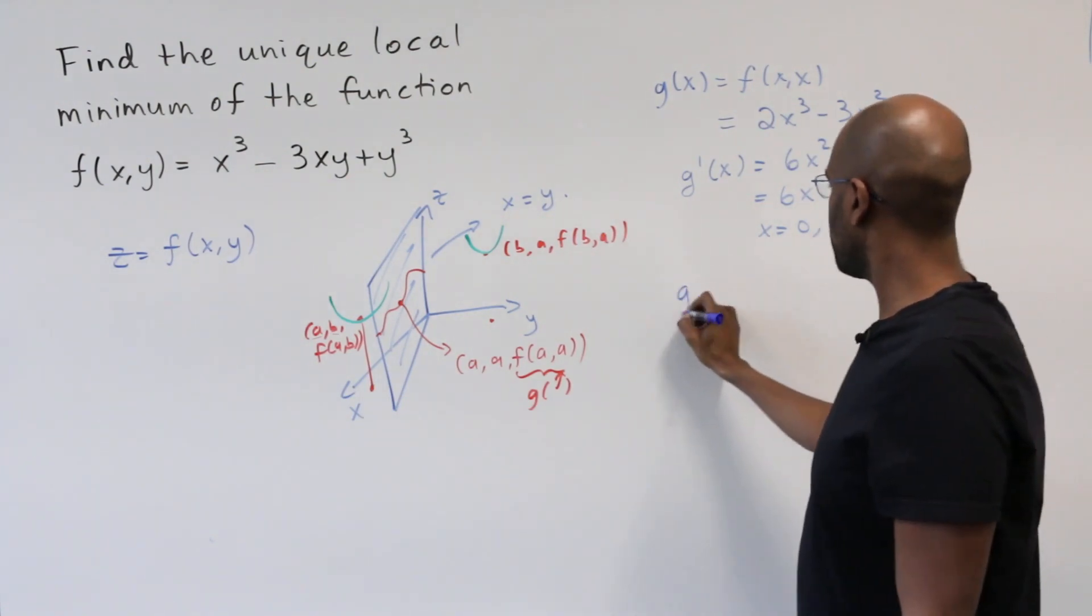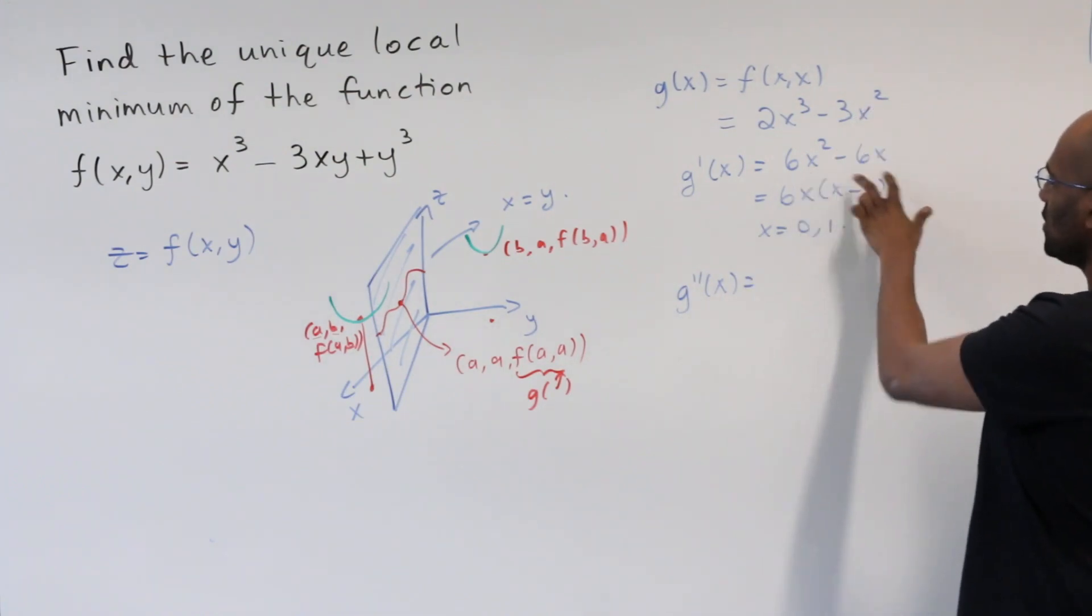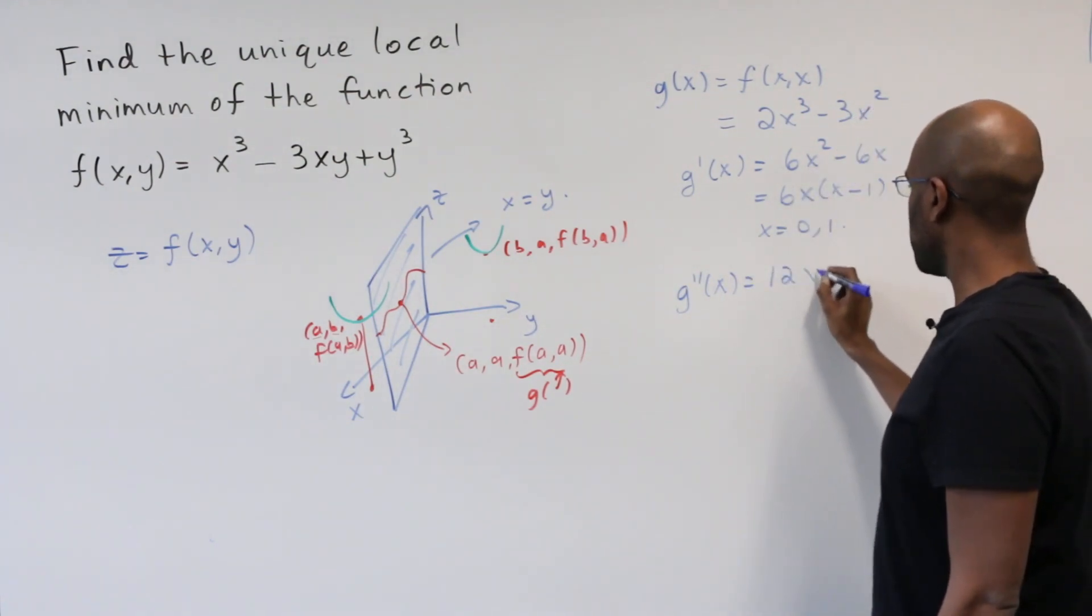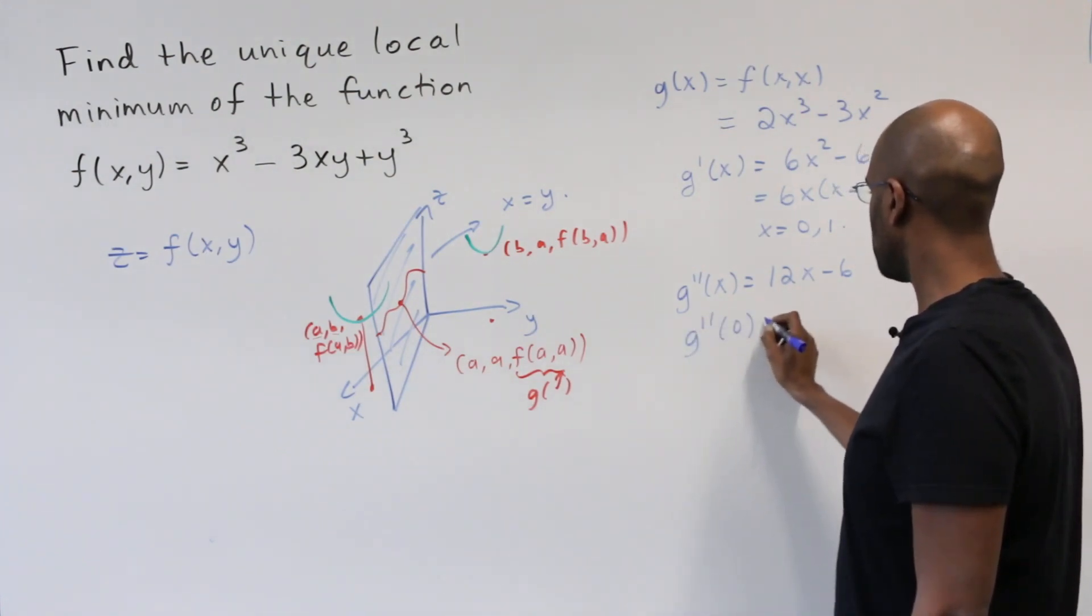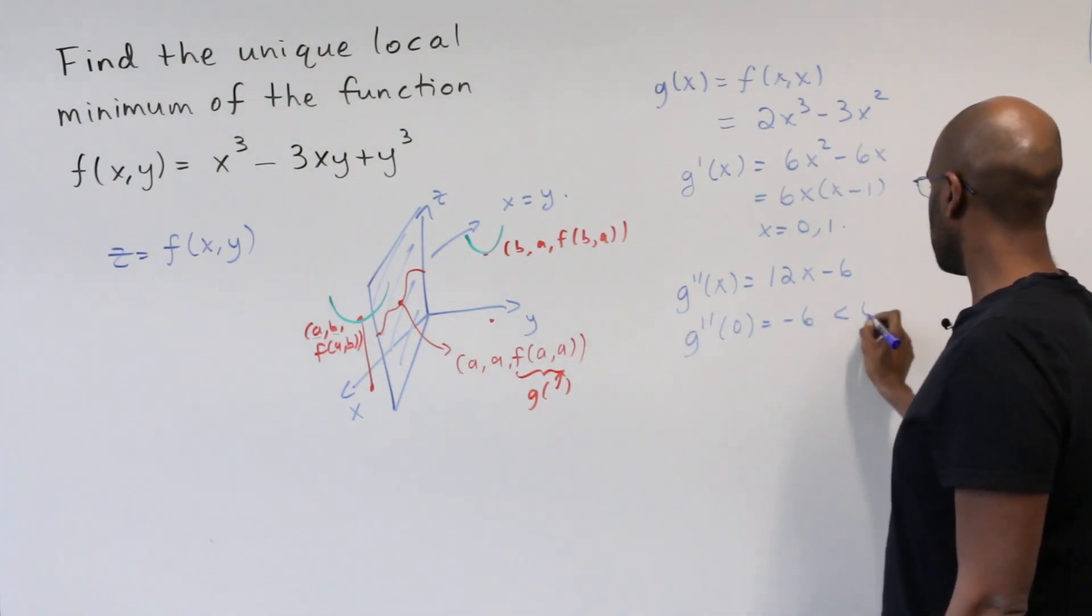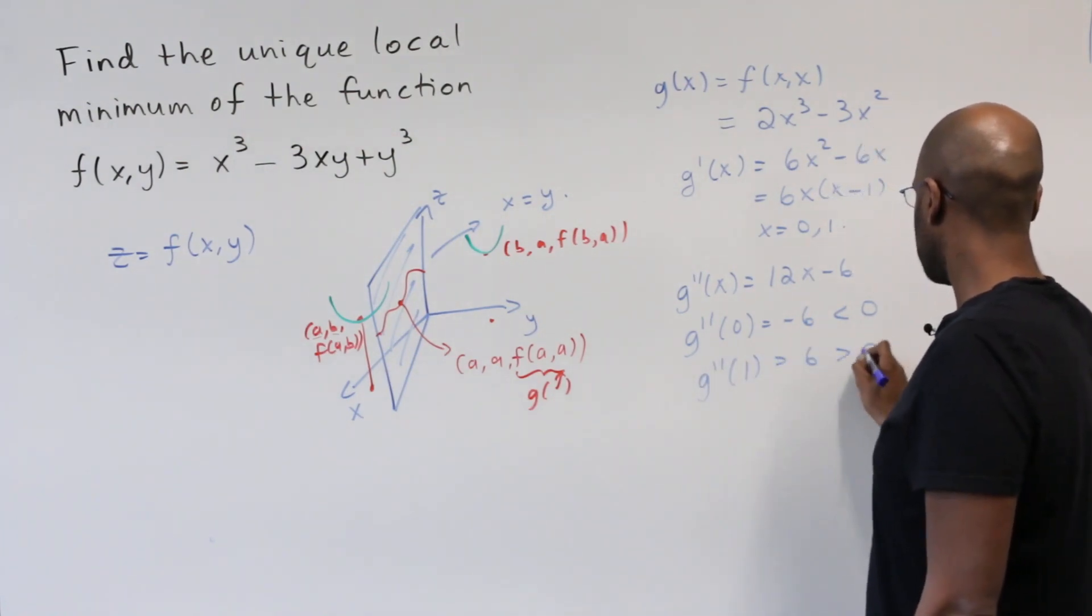Now taking a second derivative, we can classify what these critical points are. The second derivative here is 12 x minus 6. g double prime at 0 is negative 6, that's negative, and g double prime at 1 is 6, which is positive.